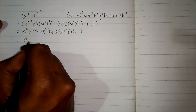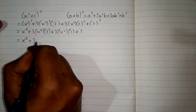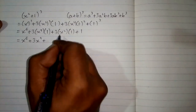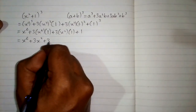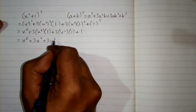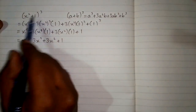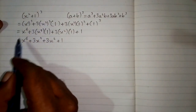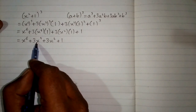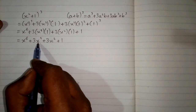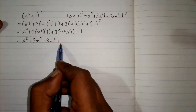So we have x to the power 6, plus 3 times 1 gives 3 x to the power 4, plus 3 times 1 gives 3 x square, plus 1. Therefore, the cube of x square plus 1 is x to the power 6 plus 3 x to the power 4 plus 3 x square plus 1.